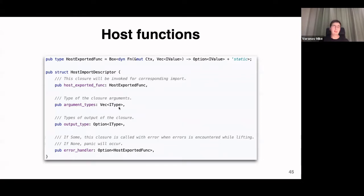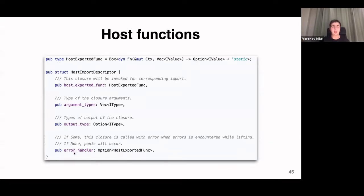The complex part is that we need to set separate fields: argument type and output type — needed for bindings, since we receive only an array of IValues and can't infer types otherwise. The last field is an error handler — there could be errors in the lifting process while lifting from wasm to complex types. The error handler can be none, in which case a panic will occur — it's the last chance to handle an error.